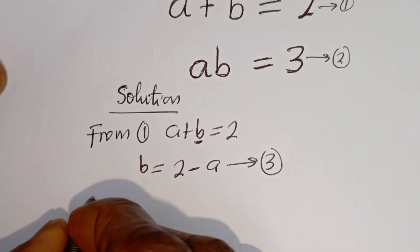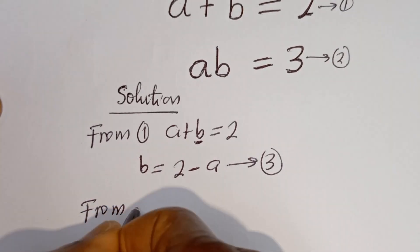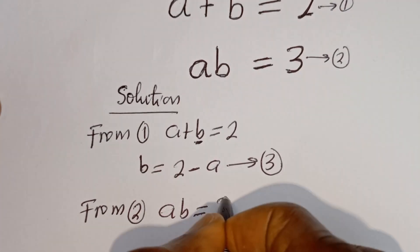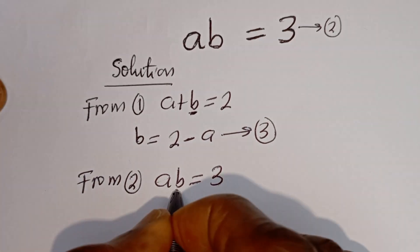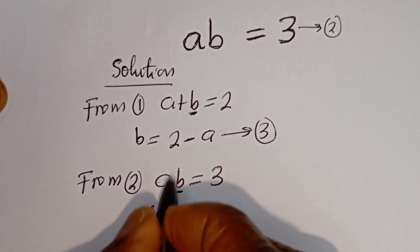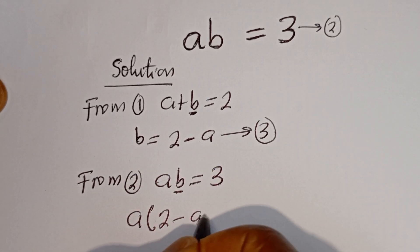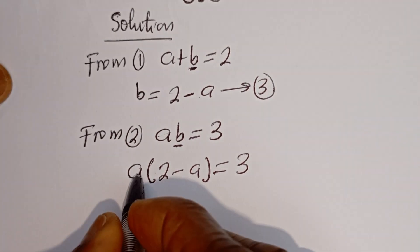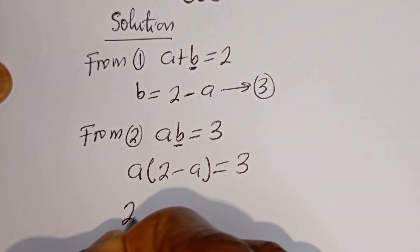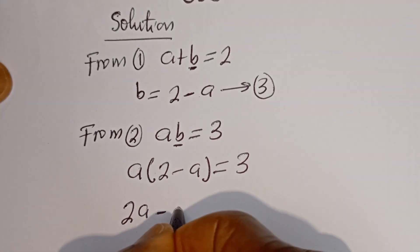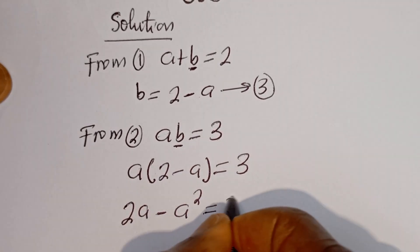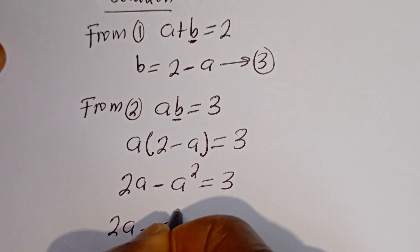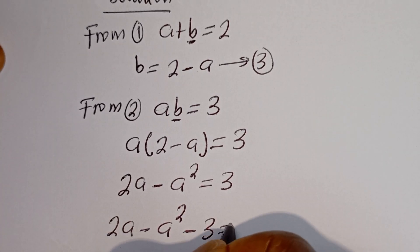Also from equation 2, AB is equal to 3. Now let's substitute for B. We have A times (2 minus A) is equal to 3. Let's open the bracket: A multiplied by 2 is 2A, minus A multiplied by A is A squared, so 2A minus A squared is equal to 3. Now here we have 2A minus A squared minus 3 is equal to 0.